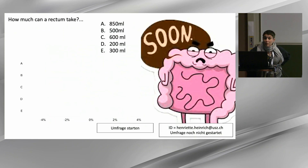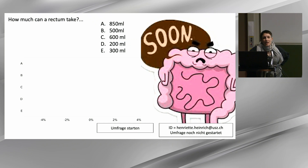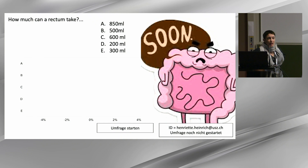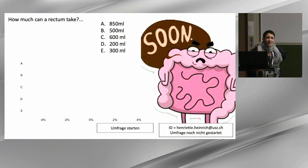Moving on to the rectum — and this is something that Mark will be able to comment on very well. I suspect he will be able to give the right answer because he is the author of the famous Stocky study. The question is: how much can a normal rectum take? Is it 850 milliliters? 500 milliliters? 600 milliliters? 200 milliliters? Or 300 milliliters? We're not talking about barostat, but actually talking about a test of retention where Stocky is being put into the rectum of healthy volunteers.